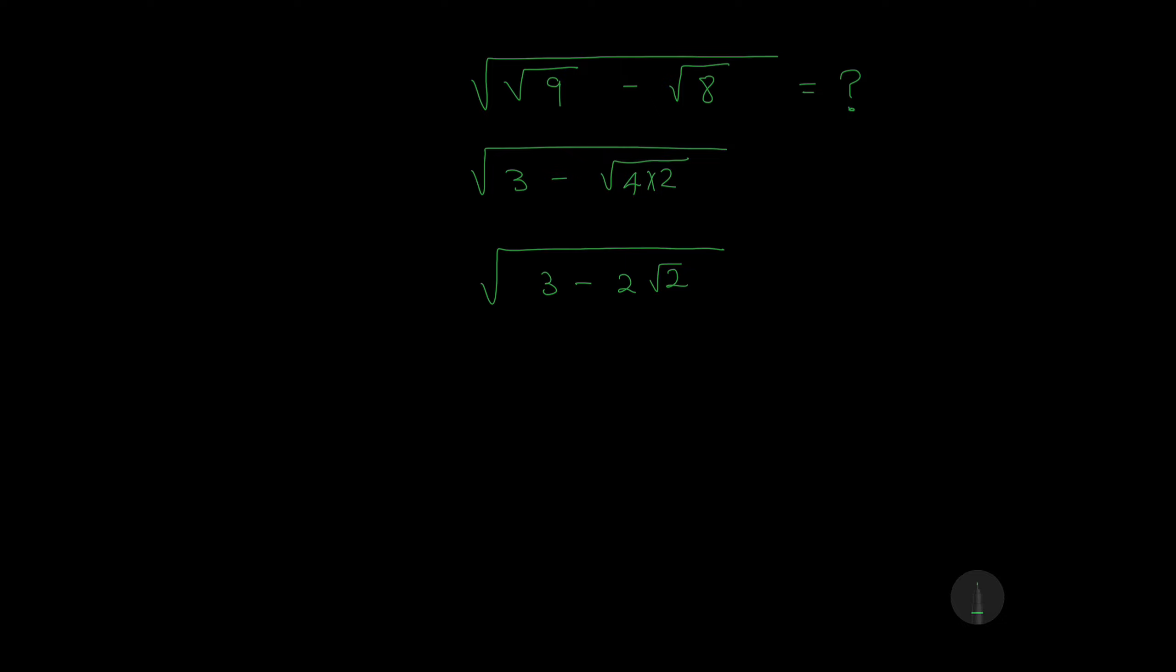We must solve 3 minus 2√2 in such a way that we'll end up cancelling the square root. To do this, just note something.